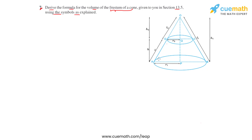Here we have a cone OAB whose base radius is R1, total height of the cone is H1, and its total slant height is L1. To get a frustum out of it, we have made use of a plane parallel to its base AB, which is DC, that cuts the cone into two parts: a smaller cone formed at the top and the frustum created at the bottom.